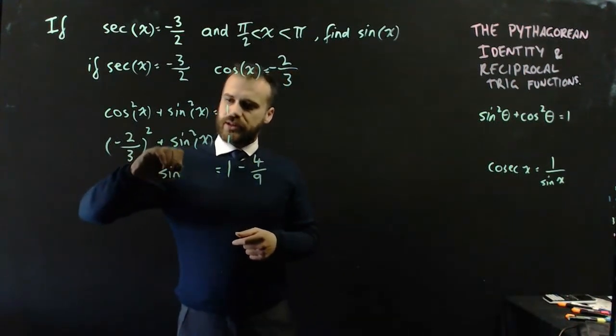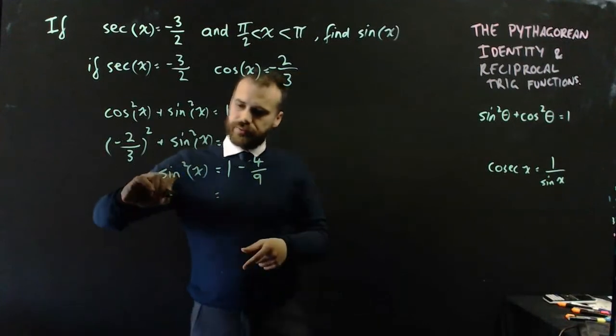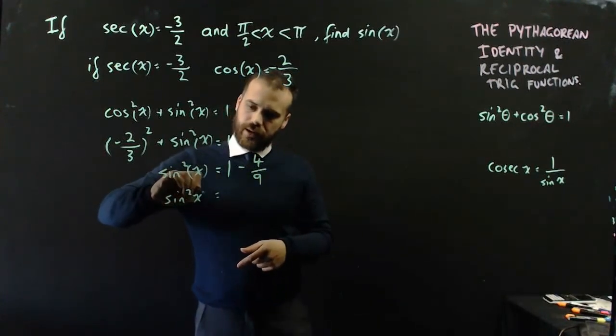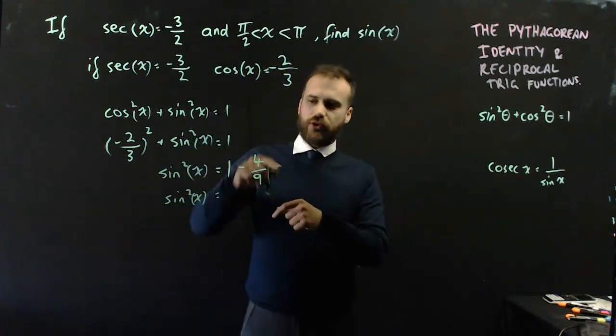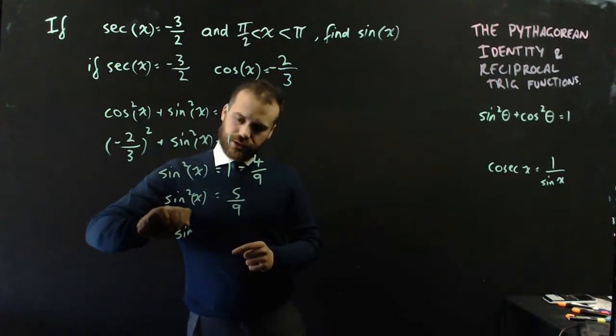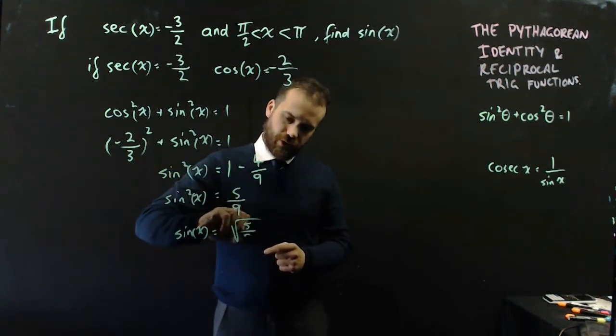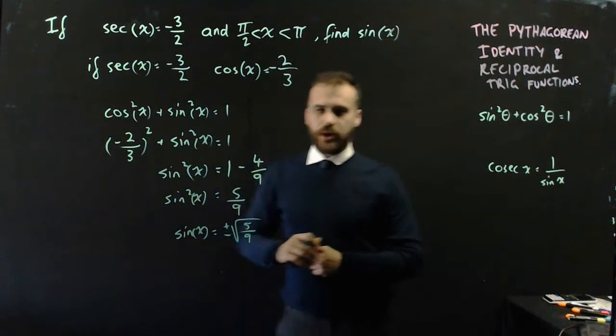And we have sine squared x here. That means that sine squared x is equal to 1 minus 4 on 9, which is 5 on 9, which means that sine x is equal to the square root of 5 on 9 plus or minus.